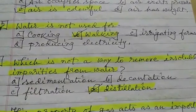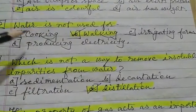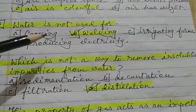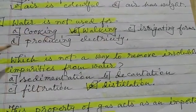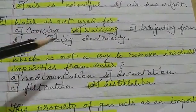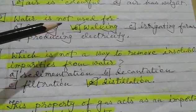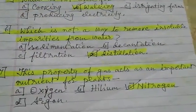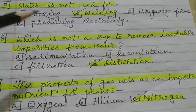Number 5: water is not used for — A) cooking, B) working, C) irrigating farms, D) producing electricity. Option B is the correct answer — working. We do not need water for working.